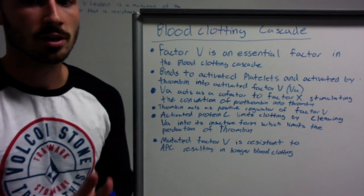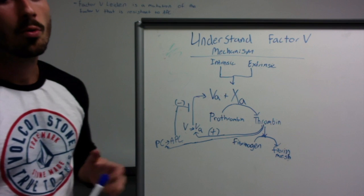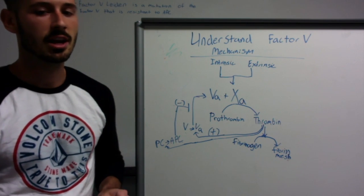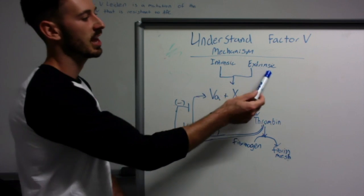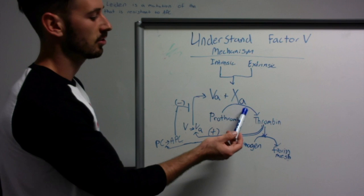Now let's look at a molecular chart to see what happens. Okay, so now let's talk about how Factor V comes into play during the blood clotting cascade. We have both the intrinsic and extrinsic pathways which converge onto activated Factor X.